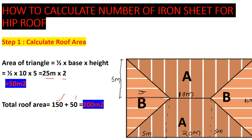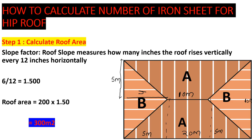Now we incorporate the slope factor, which measures how many inches the roof rises vertically for every 12 inches horizontally. We are using a slope of 6 to 12, which gives a slope factor of 1.50. So our adjusted roof area is 200 × 1.50 = 300 square meters. That is the roof area we will use to calculate the number of iron sheets.